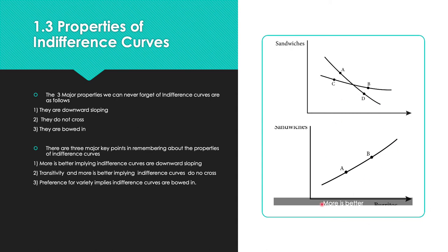Here we have a valid indifference curve because 'more is better' implies it is always downward sloping — and you can see that it is. This is a valid indifference curve. When curves cross, as shown in the second figure, that is invalid. The 'more is better' assumption always implies downward sloping curves.